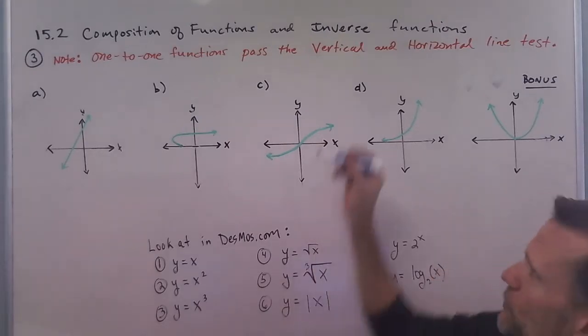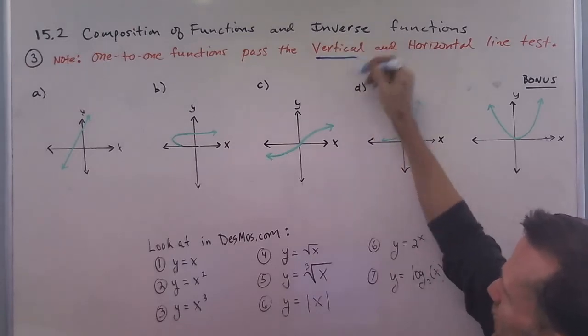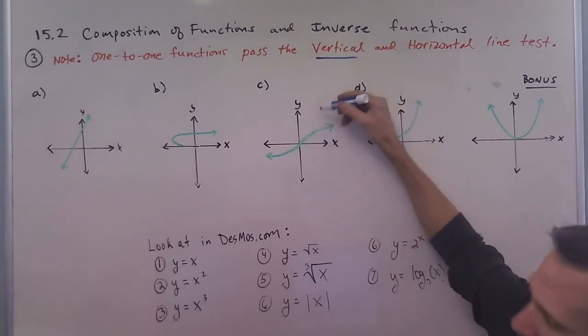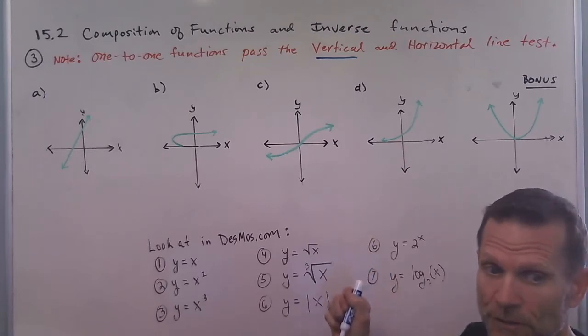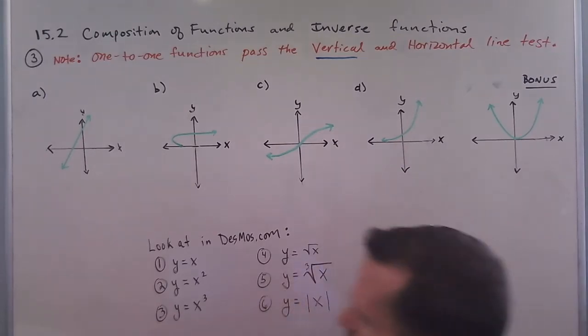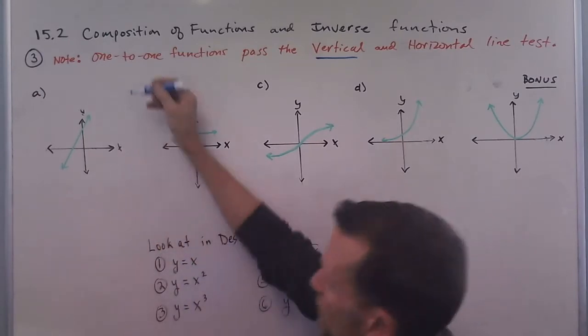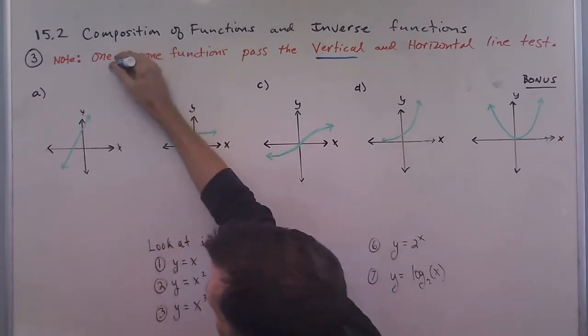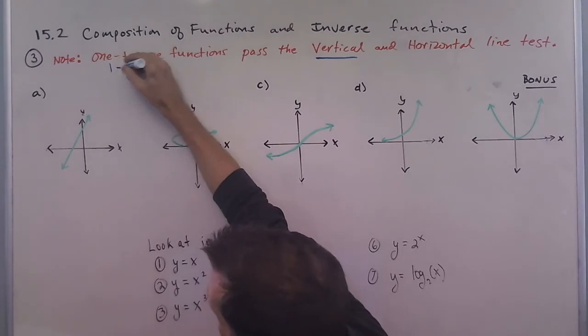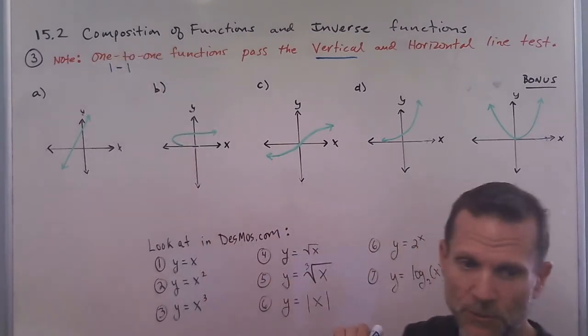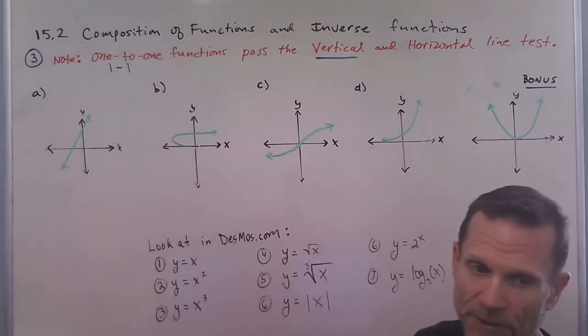Now remember, we use the vertical line test if we have a picture to test whether a relation is a function. Sometimes you see this written as one-to-one. It kind of looks like one minus one, but you'll see it written that way sometimes.